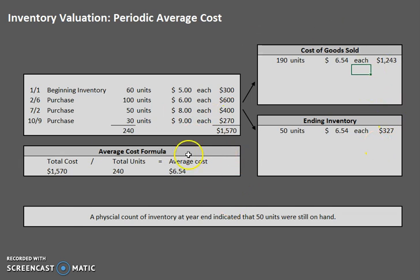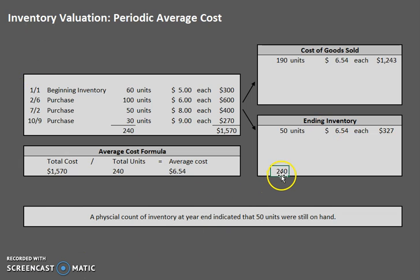Just like we did with the other methods, let's check our math to make sure we didn't make any errors. This is not a guaranteed checking method, but it can help you spot a blunder. We have 240 total units — that matches up. And our cost of goods sold of $1,243 plus $327 equals a perfect $1,570.